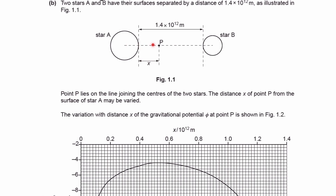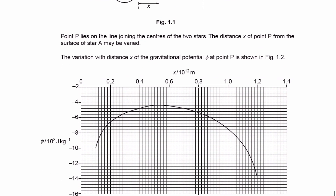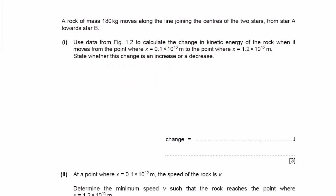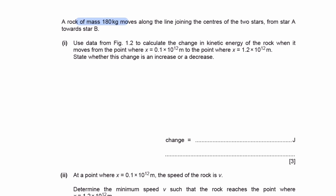X is the distance from the surface of star A. The variation of gravitational potential phi — just bear in mind, usually gravitational potential is given the symbol V at A-Level (AQA, OCR all use the symbol V) — gravitational potential phi, or V, at point P is shown in figure 1.2. We see that the gravitational potential increases and then decreases. A rock of mass 180 kilograms moves along the line joining the centers of the two stars from star A towards star B. We use the data from figure 1.2 to calculate the change in kinetic energy of the rock when it moves from x = 0.1 × 10¹² to x = 1.2 × 10¹², and state whether this is an increase or a decrease.